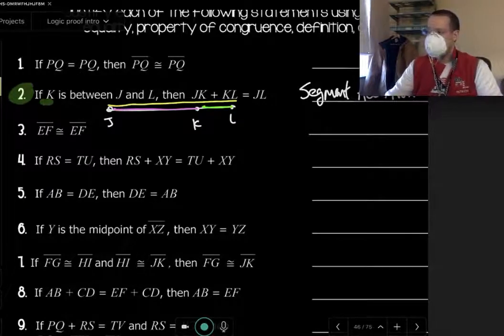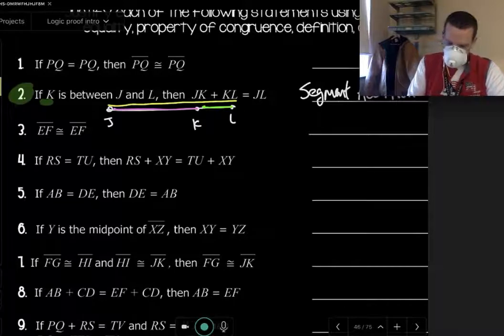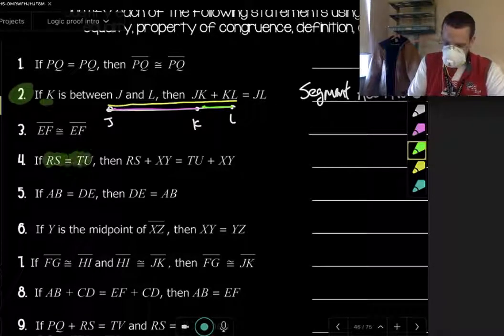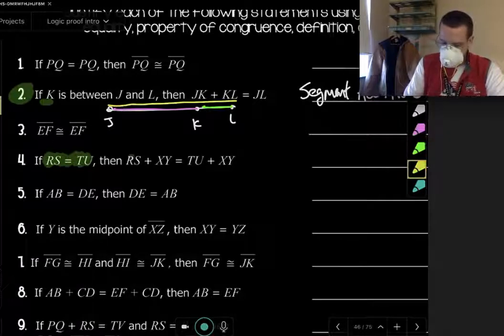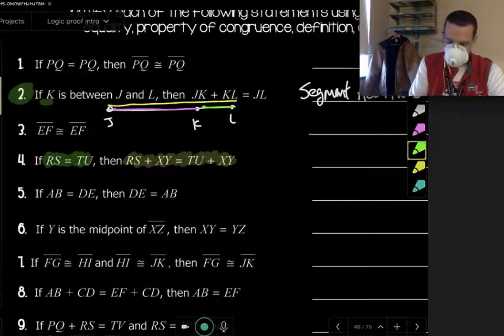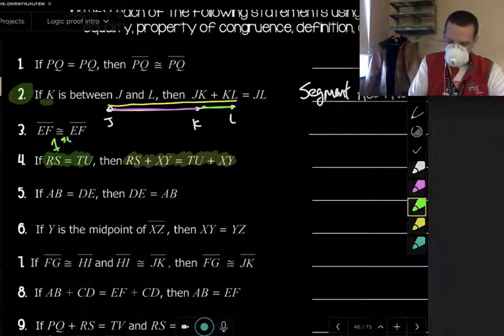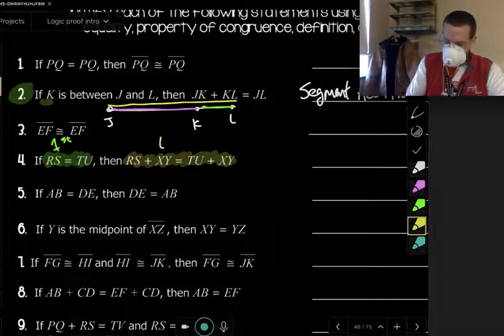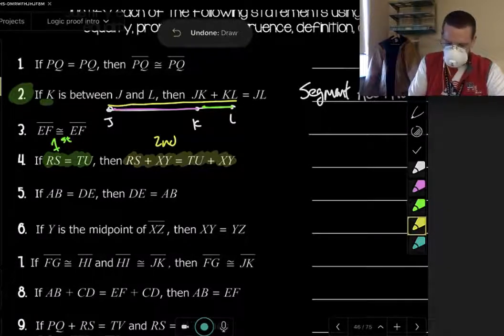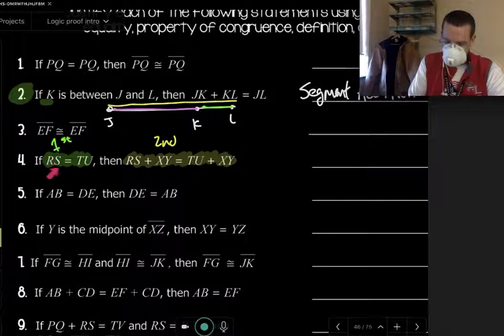Let us look at number four. We have if this is true, then this happens. So the way I like to think about this is like this happens first. So first we have this, or this is what we're given, and then something happens. So this is kind of second. So what I look at is, how did these two things change?